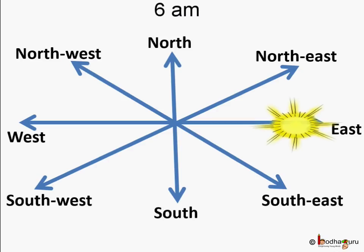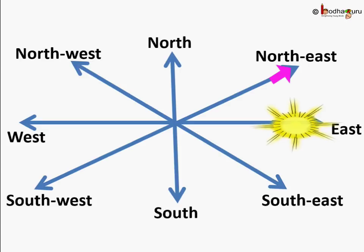Look at the diagram. If you find east, you can find the other directions easily. North-west is in between north and west. North-east is in between north and east. South-east is in between south and east. South-west is in between south and west.